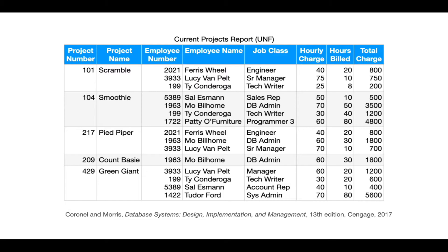I've titled this as a report — it's not really a table. It's definitely not something that's in first normal form, because we have repeating groups. Each of these columns, except for the first two, has multiple values in it, which disqualifies this as a first normal form relation. So the first thing we need to do is just convert this into first normal form.